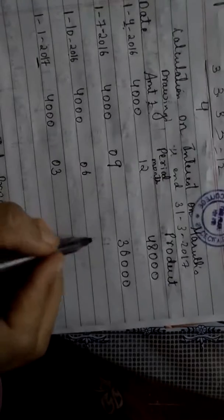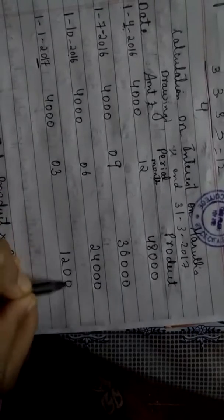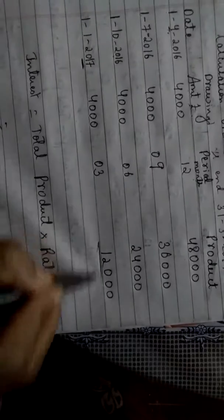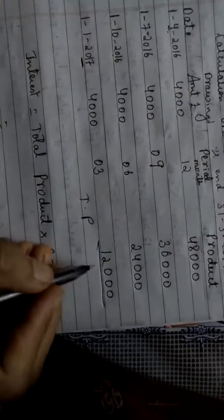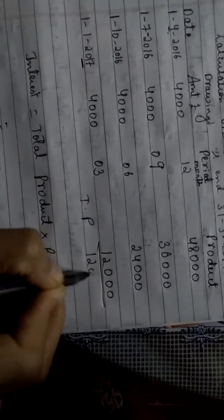Now you will multiply this. 4,000 into 12 gives 48,000. Multiply this - 36,000. This - 24,000. This is 12,000. Add this. This will give you total product. Add all. When you add, it will give you 1,20,000.